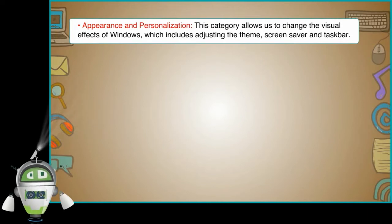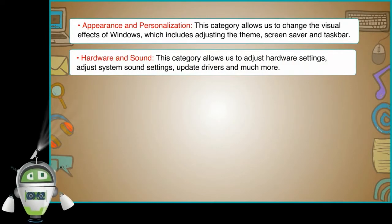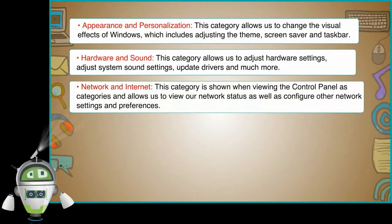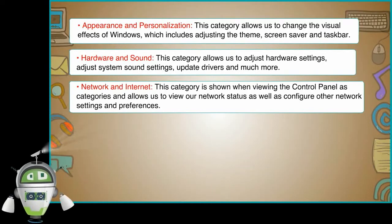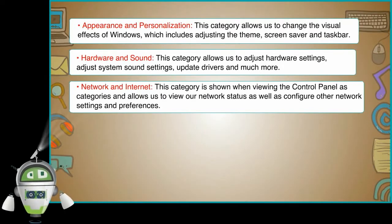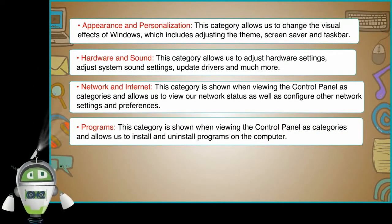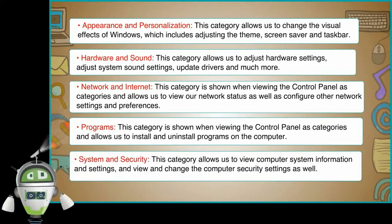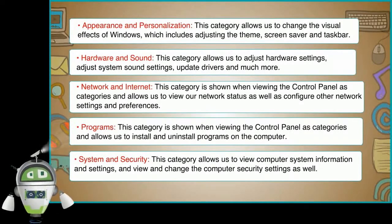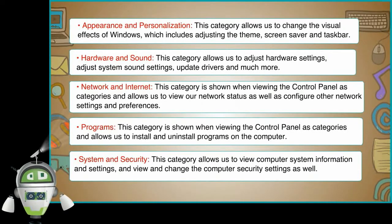Some important computer settings and their uses are as follows. Appearance and Personalization: This category allows us to change the visual effects of Windows, which includes adjusting the theme, screen saver and taskbar. Hardware and Sound: This category allows us to adjust hardware settings, adjust system sound settings, update drivers and much more. Network and Internet: This category allows us to view our network status as well as configure other network settings and preferences. Programs: This category allows us to install and uninstall programs on the computer. System and Security: This category allows us to view computer system information and settings and view and change the computer security settings.